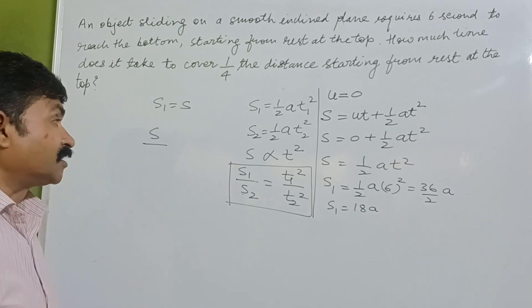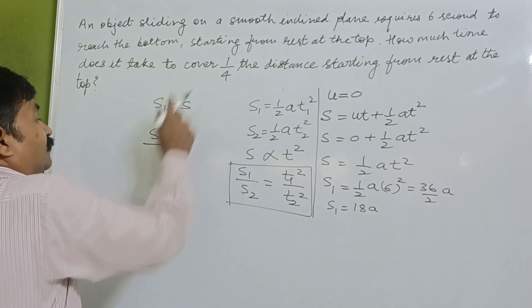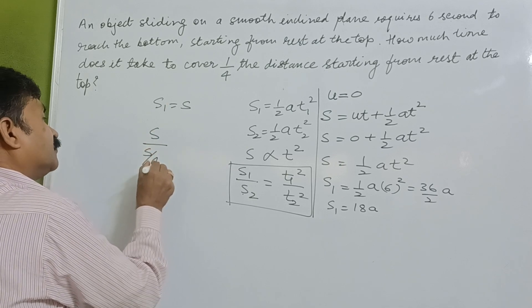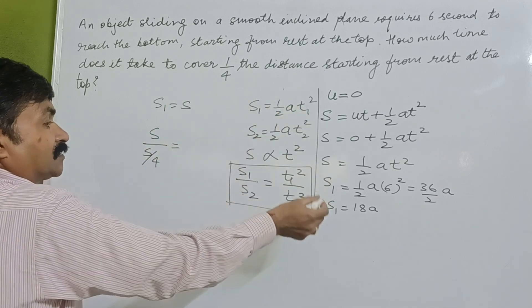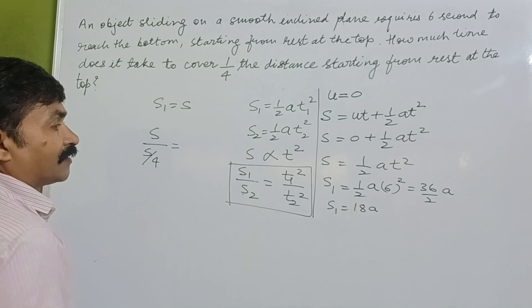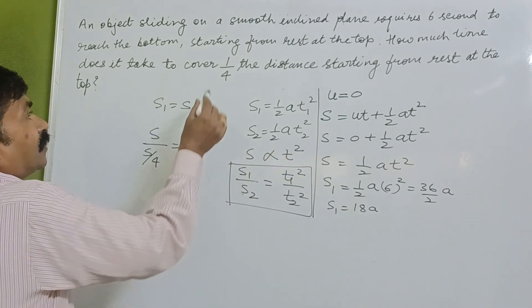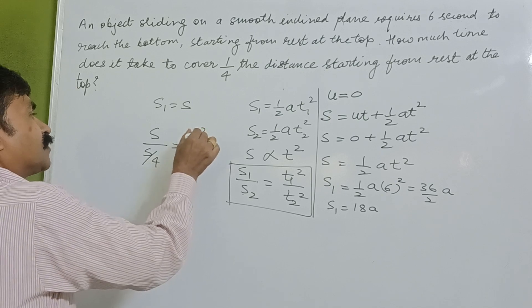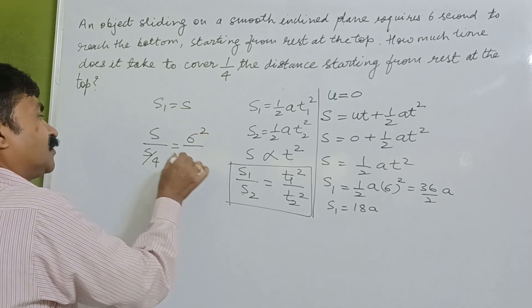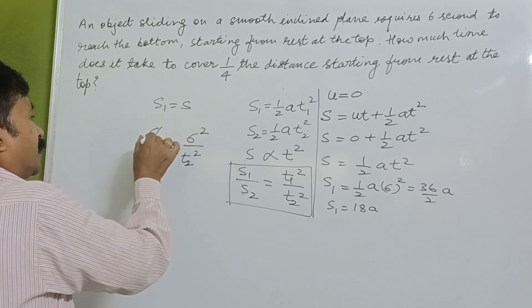The distance covered is given to us as one-fourth, so s/4. Time is given to us—we have already calculated. If we go through this, t1 is square, so it is 6², and t2 we need to determine.